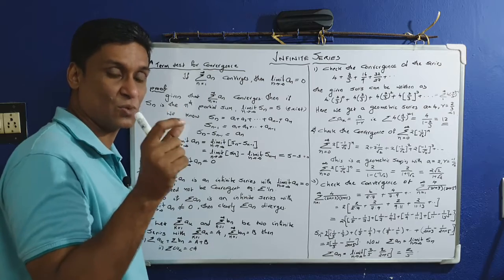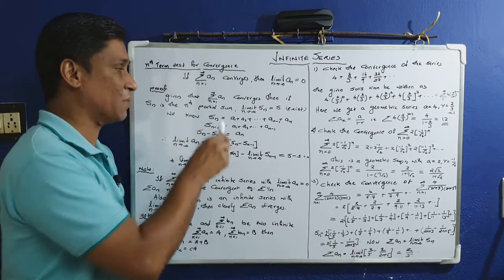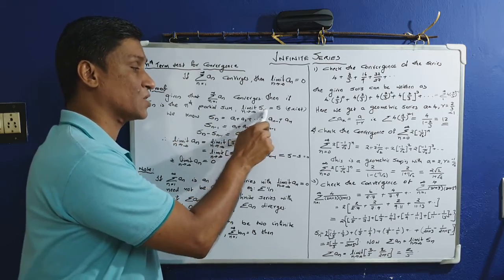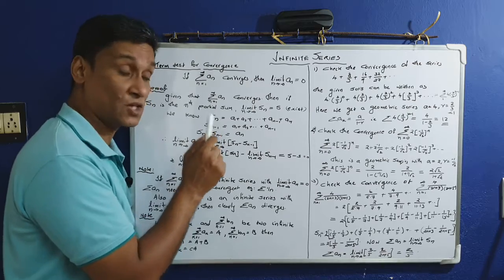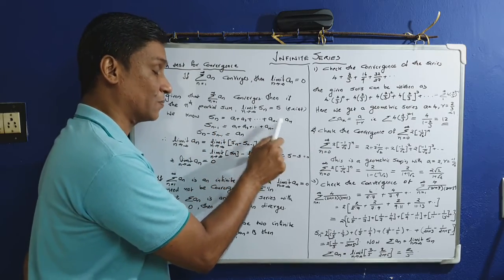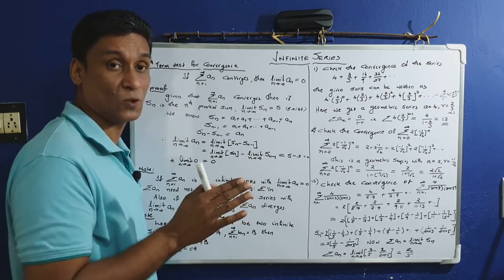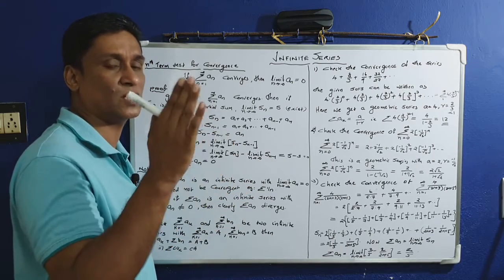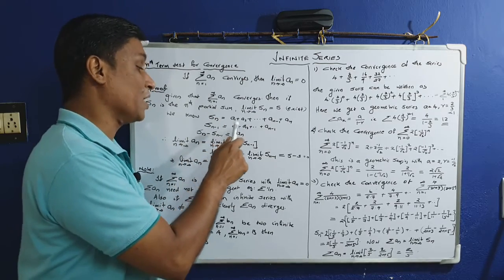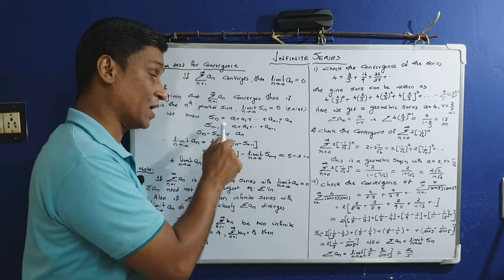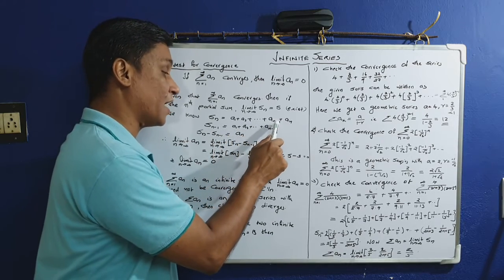Here s is the value of that limit. Now, s_n is the nth partial sum equal to a_1 + a_2 + a_3 + ... + a_{n-1} + a_n, and s_{n-1} is the (n-1)th partial sum equal to a_1 + a_2 + ... + a_{n-1}. Therefore s_n minus s_{n-1} equals a_n.